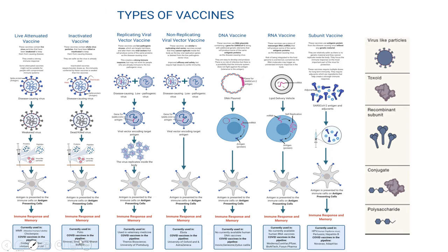This inactivated technology is used in polio and currently Bharat Biotech's Covaxin and Sinopharm from China are using this technology for COVID-19. For completeness, the subunit vaccine contains part of the virus which is injected into the body to create the same antibody response and immune memory. Subunit vaccines can be further divided into virus-like particles, toxoids, recombinant subunit vaccines, conjugate vaccines, and polysaccharide vaccines.